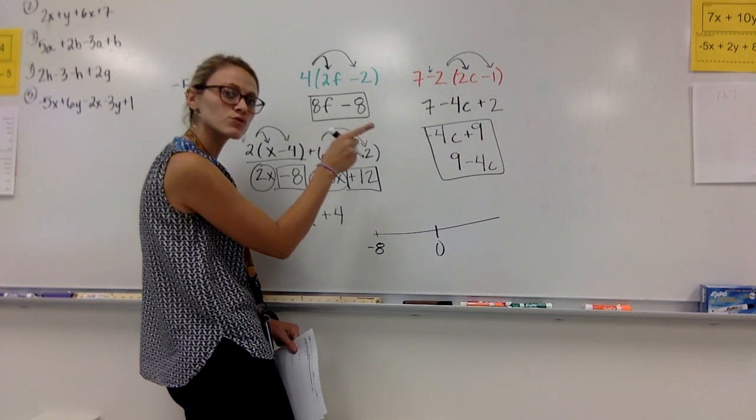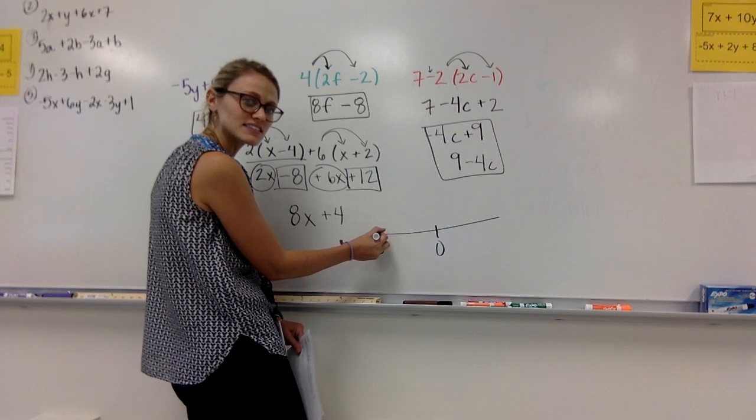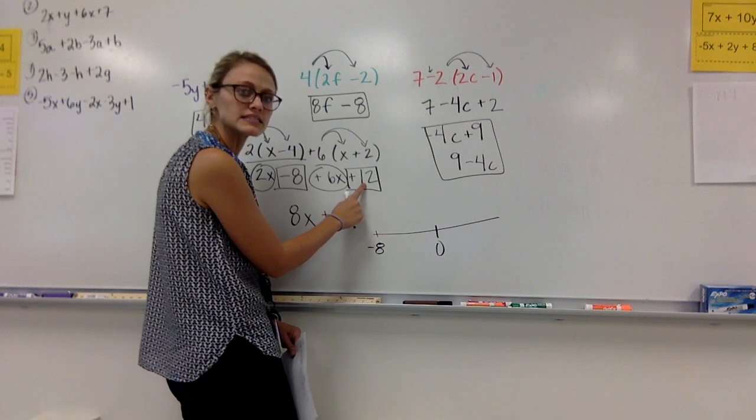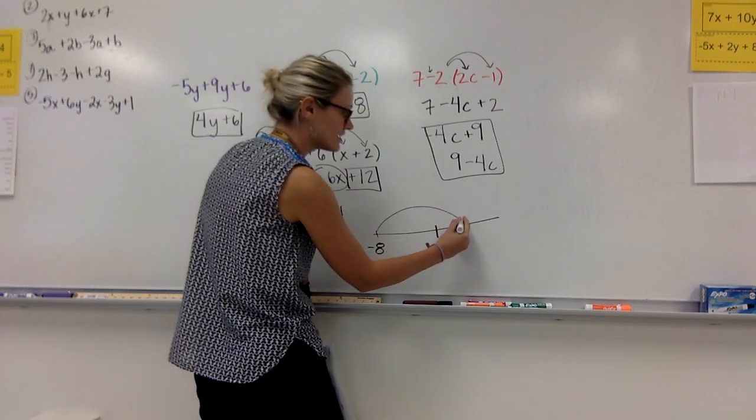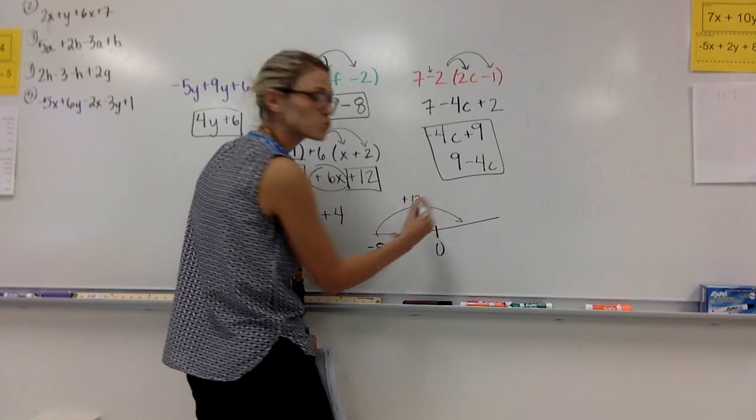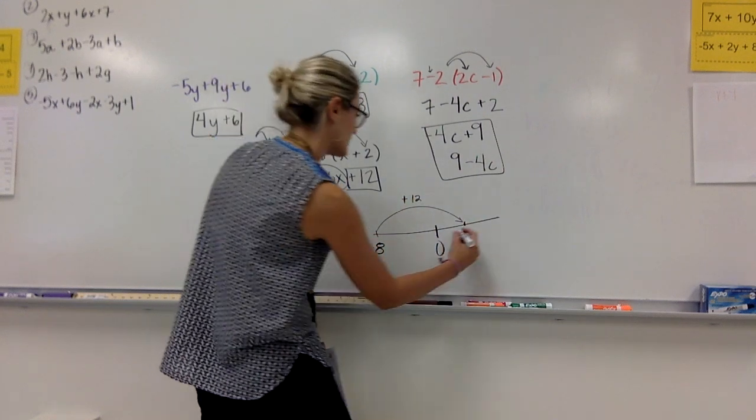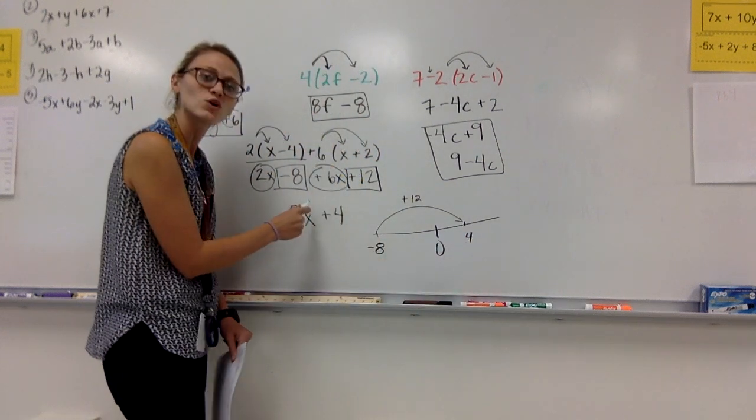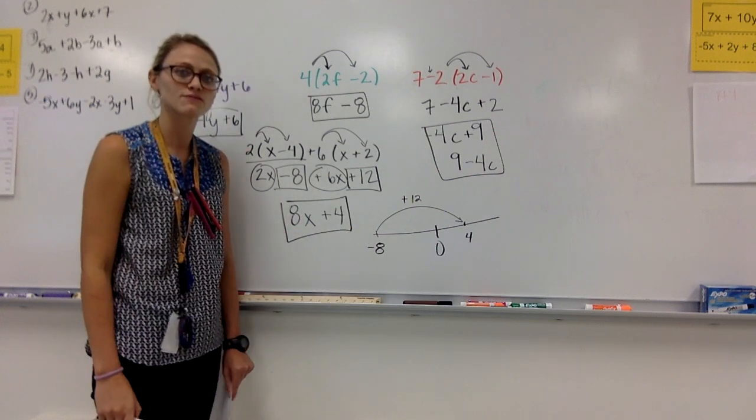If I'm adding, I move to the right. So I start at -8. I would move to the right 12 places. If you start at -8 and you add 12, you will end up at positive 4. Therefore, my final answer is 8x + 4.